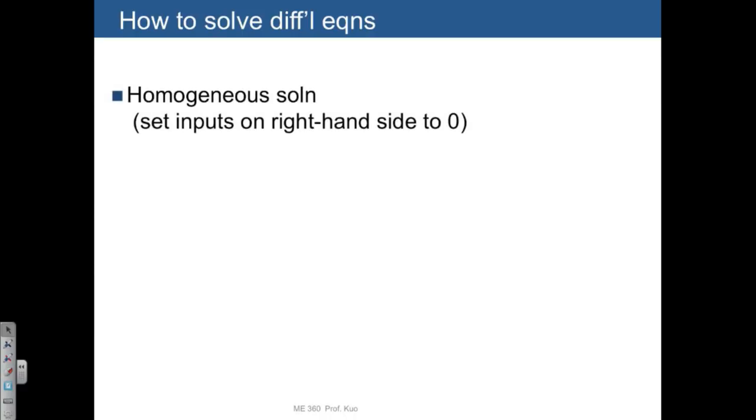One is solving for what we call the homogeneous solution, where we set the input, the right-hand side of the equation, to zero. And then the second step is to find the particular solution where we're going to put the inputs back in.